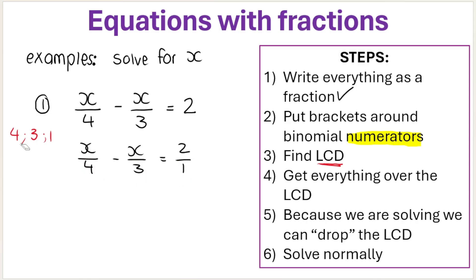What is the smallest number that 4, 3, and 1 can divide into? I hope you are thinking 12. If you're thinking the LCD is 12, you are thinking correctly. How to check: can 4 divide into 12? Yes. Can 3 divide into 12? Yes. Can 1 divide into 12? Yes. There isn't a number smaller than that, so that's the lowest one.